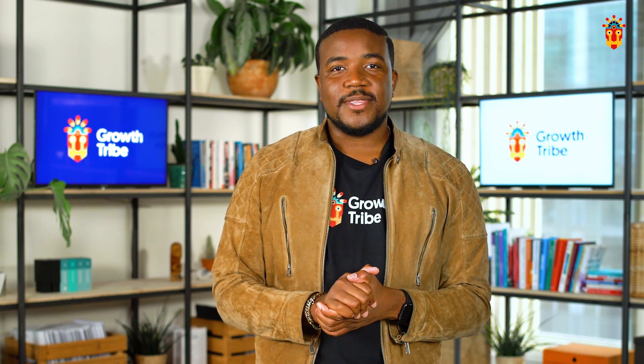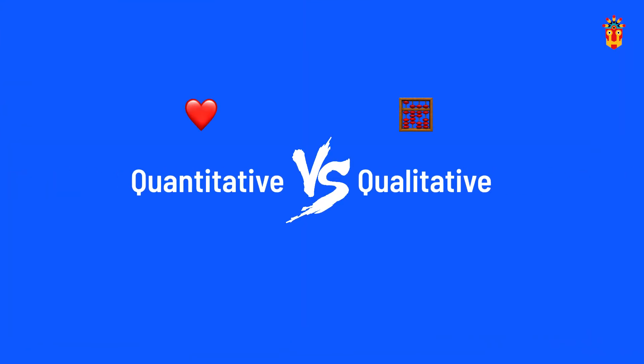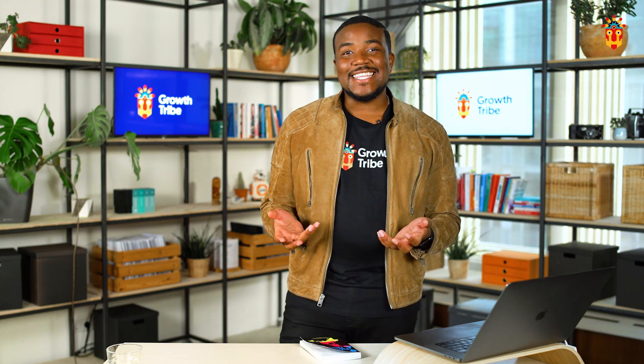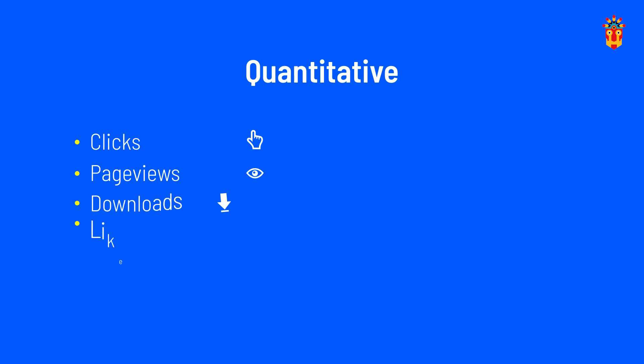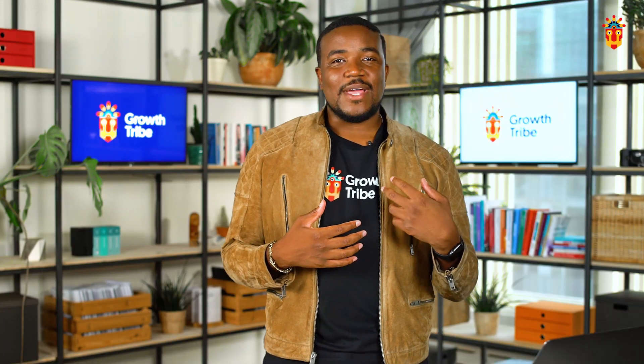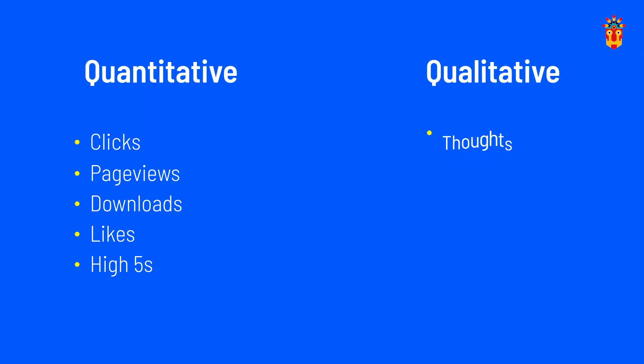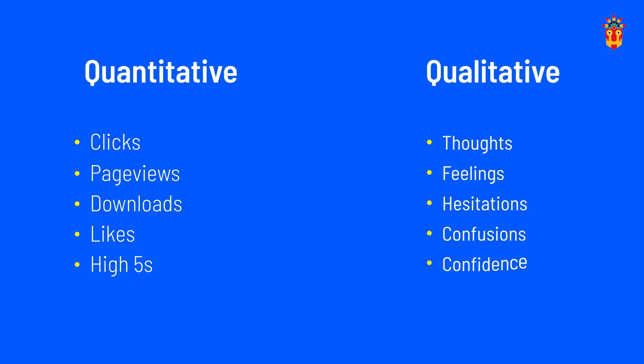I like to make sure we talk about them in pairs. So for pair number one, we're going to talk about quantitative versus qualitative. Quantitative has the hint in the name — it's all about quantities, things you can count: the clicks, the page views, the downloads, the likes, the high fives. Whereas qualitative is all about those soft skills, the things that people don't actually communicate with their actions, but maybe their thoughts, their feelings, hesitations, confusions. They may lack some confidence. They might have a certain tone of voice in their complaint or their review. And that's pair number one, qualitative versus quantitative.